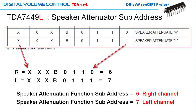And finally, for the left and right balance or speaker attenuator, the subaddress for the right channel is 6 and the subaddress for the left channel is 7 respectively.